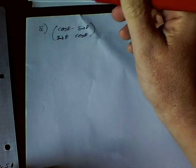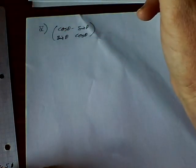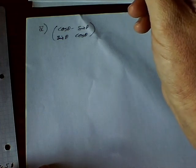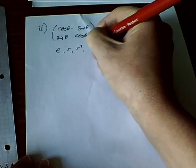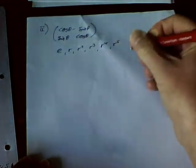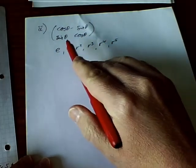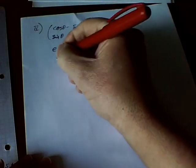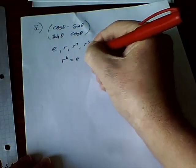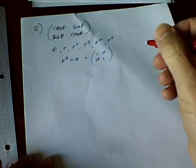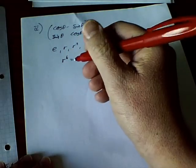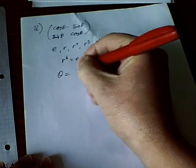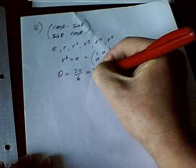A subgroup of order 6 means these rotations form a cyclic subgroup where the rotation takes us all the way around back to the start after 6 steps. So R⁶ must equal the identity, meaning R⁶ rotates through 2π radians. That means the angle θ must be 2π over 6, which is π/3.